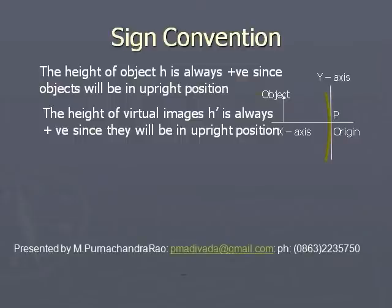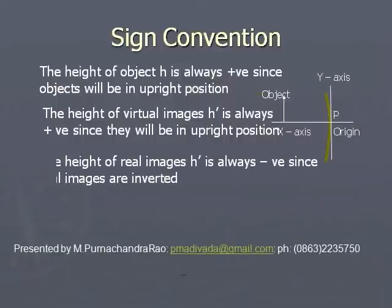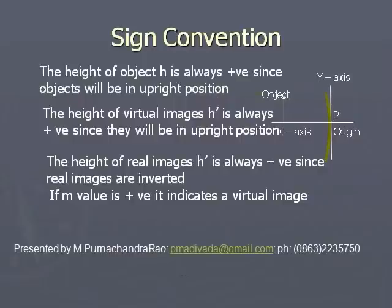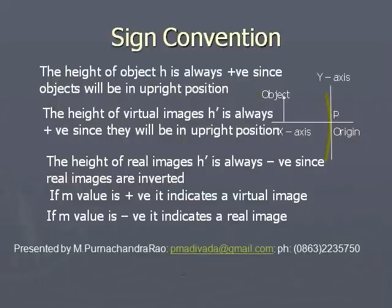Virtual images are erect, so the heights of virtual images are positive. Real images are inverted, so the heights of real images are negative. By substituting these values, if you get a positive M value, it indicates a virtual image. If M is negative, it indicates a real image.